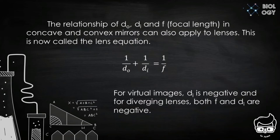The relationship of D sub O, D sub I, and F for the focal length in concave and convex mirrors can also apply to lenses. This is now called the lens equation. We can express that as 1 over D sub O plus 1 over D sub I equals 1 over F. For virtual images, D sub I is negative, and for diverging lenses, both F and D sub I are negative.